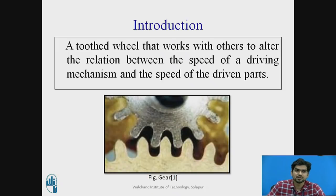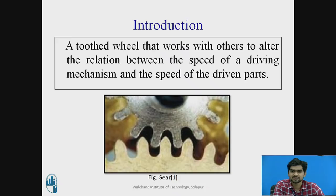So, introduction. A gear is nothing but a toothed wheel that works with another to alter the relation between the speed of the driving mechanism and the speed of the driven parts. We use the gear for transmission from one shaft to another shaft, and the gear drive gives you a positive drive. If you use the belt drive, slippage action will occur, due to which efficiency will get decreased. So to avoid that, we can use the gear drive.